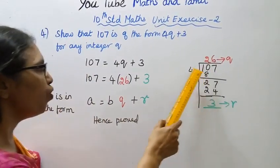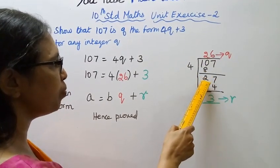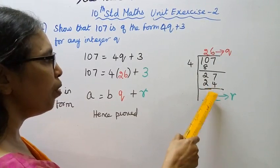107 divided by 4. First 2, 4 times 2 is 8, balance 27. Then 6, 4 times 6 is 24, balance 3.